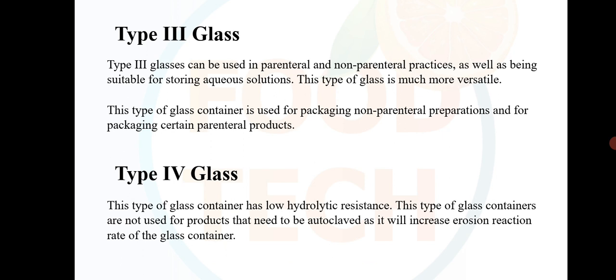Type 3 glass can be used in parenteral and non-parenteral practices, as well as being suitable for storing aqueous solutions. This type of glass container is used for packaging non-parenteral preparations and certain parenteral products. Type 4 glass has low hydrolytic resistance — Type 4 glass containers are not used for products that need to be autoclaved, as it will increase the erosion reaction rate of the glass container.